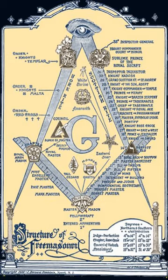There are many organizations and orders which form part of the widespread fraternity of Freemasonry, each having its own structure and terminology. Collectively these may be referred to as Masonic Bodies, Masonic Orders or Appendant Bodies of Freemasonry.